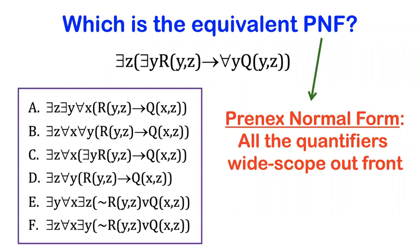It's when you have all the quantifiers wide scope, so all the quantifiers are stacked up out front at the beginning of the sentence. That's why this original sentence is not in PNF, because these quantifiers are buried in here. They're too narrow scope, narrow scope on this arrow here.